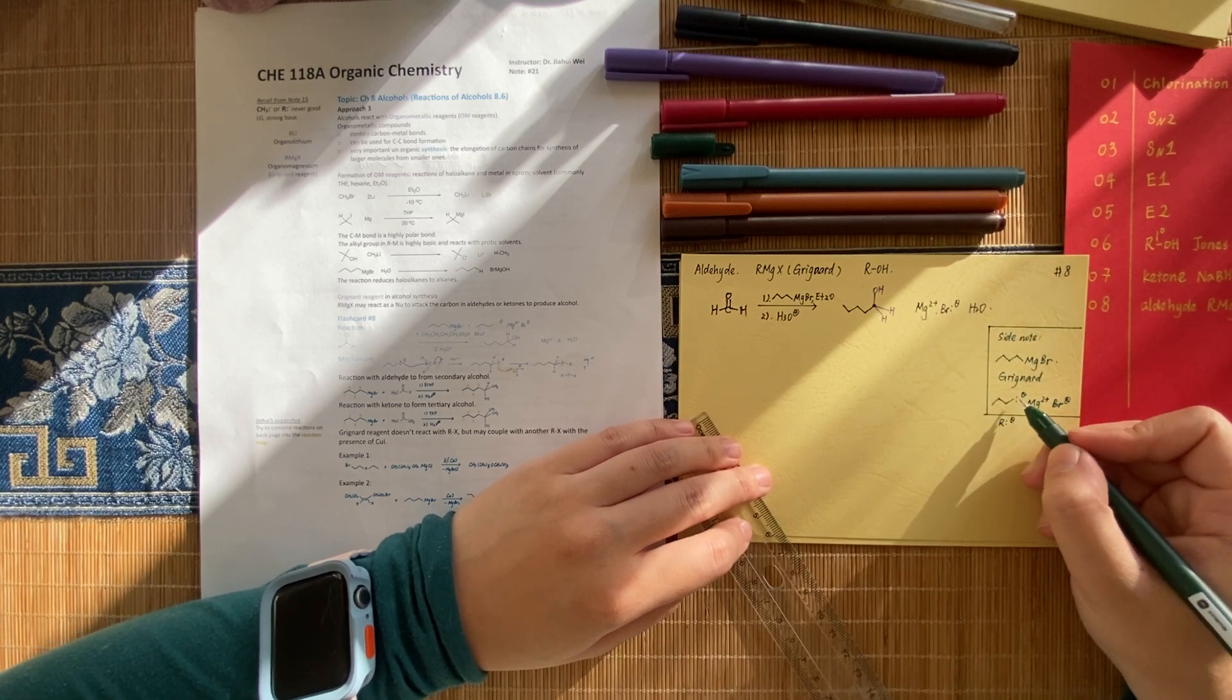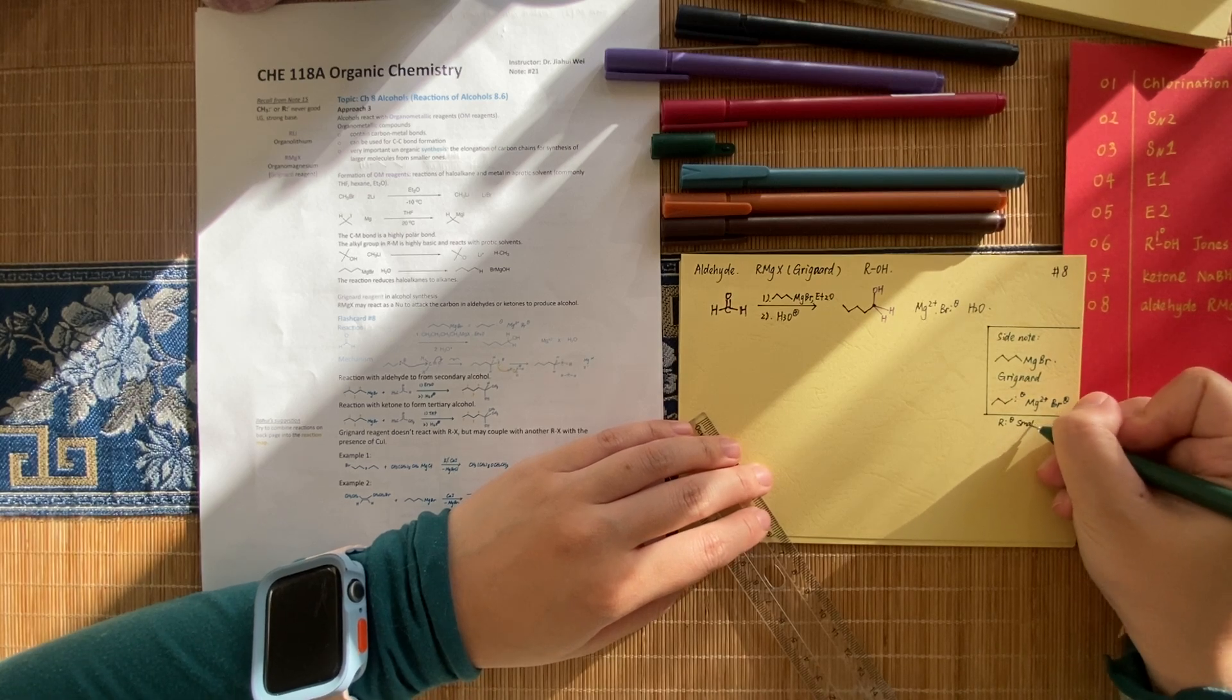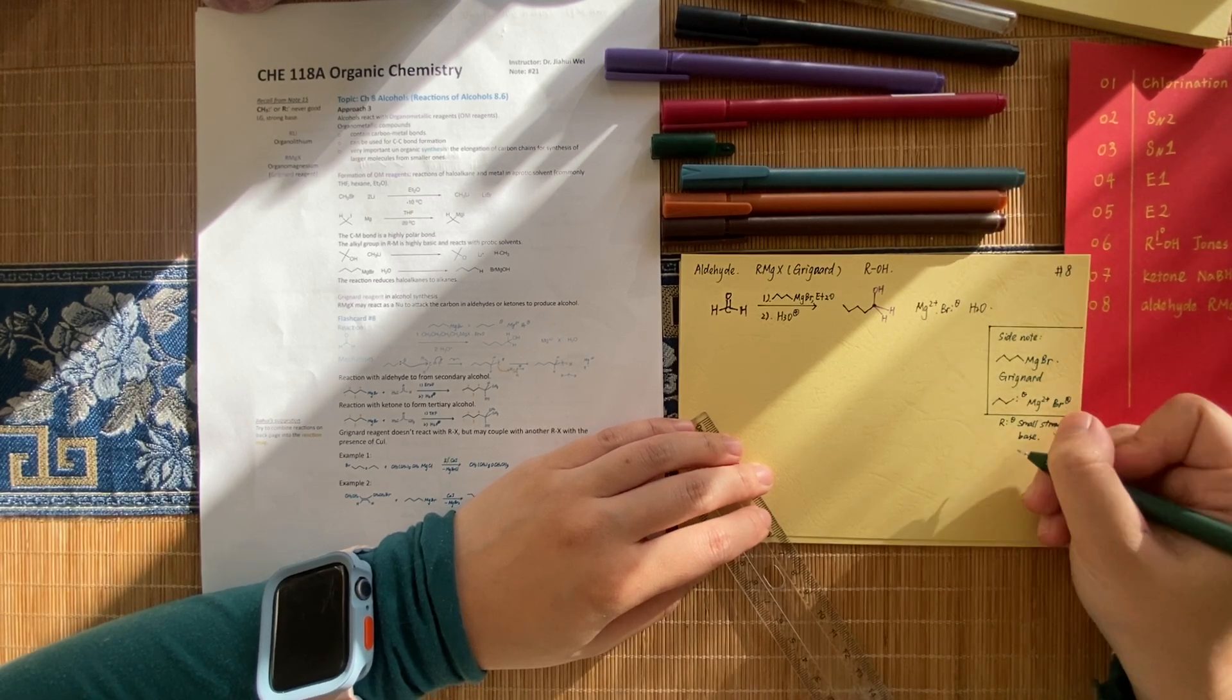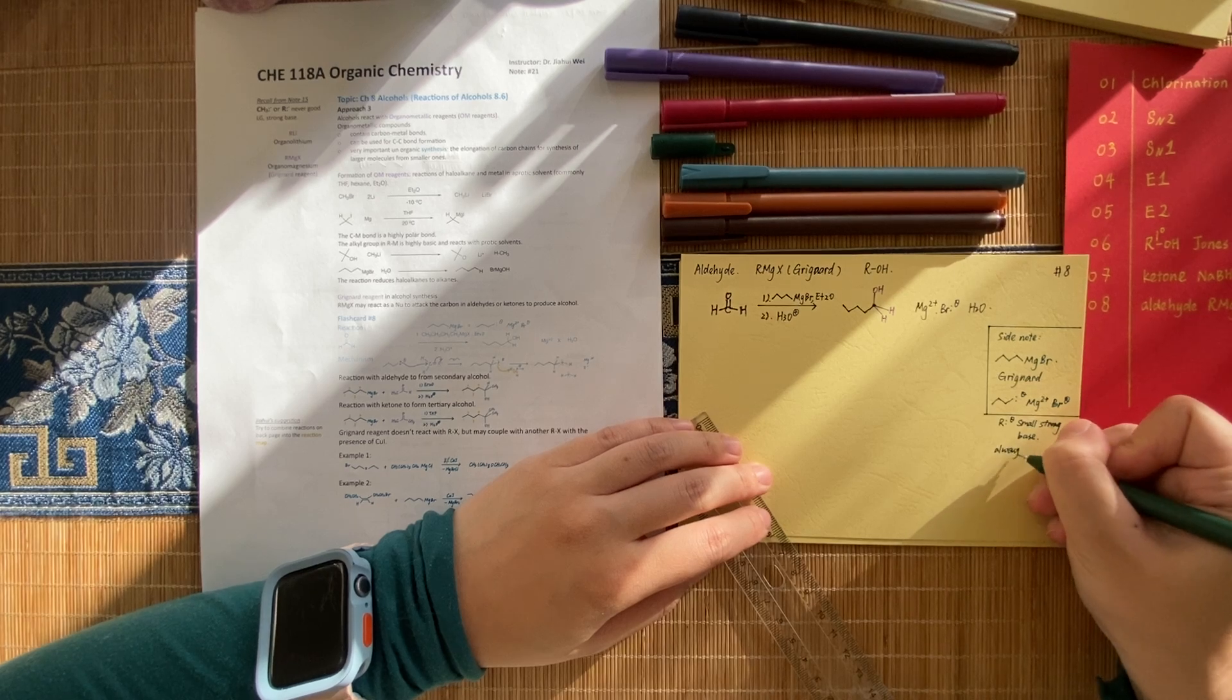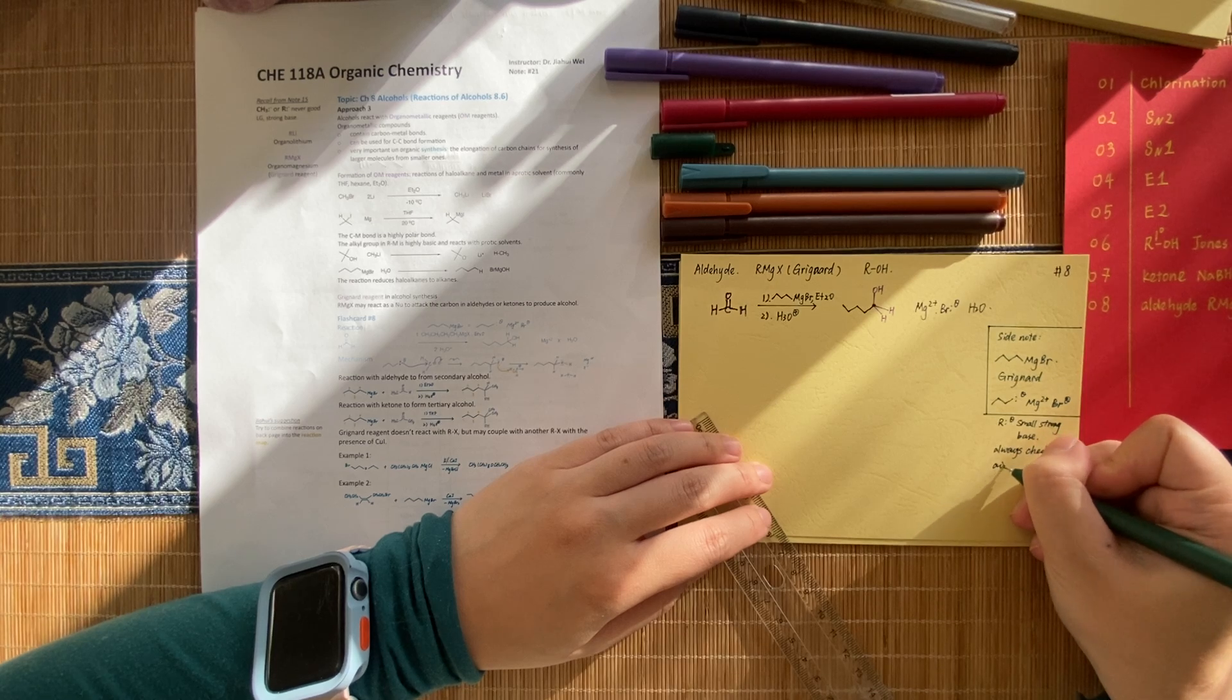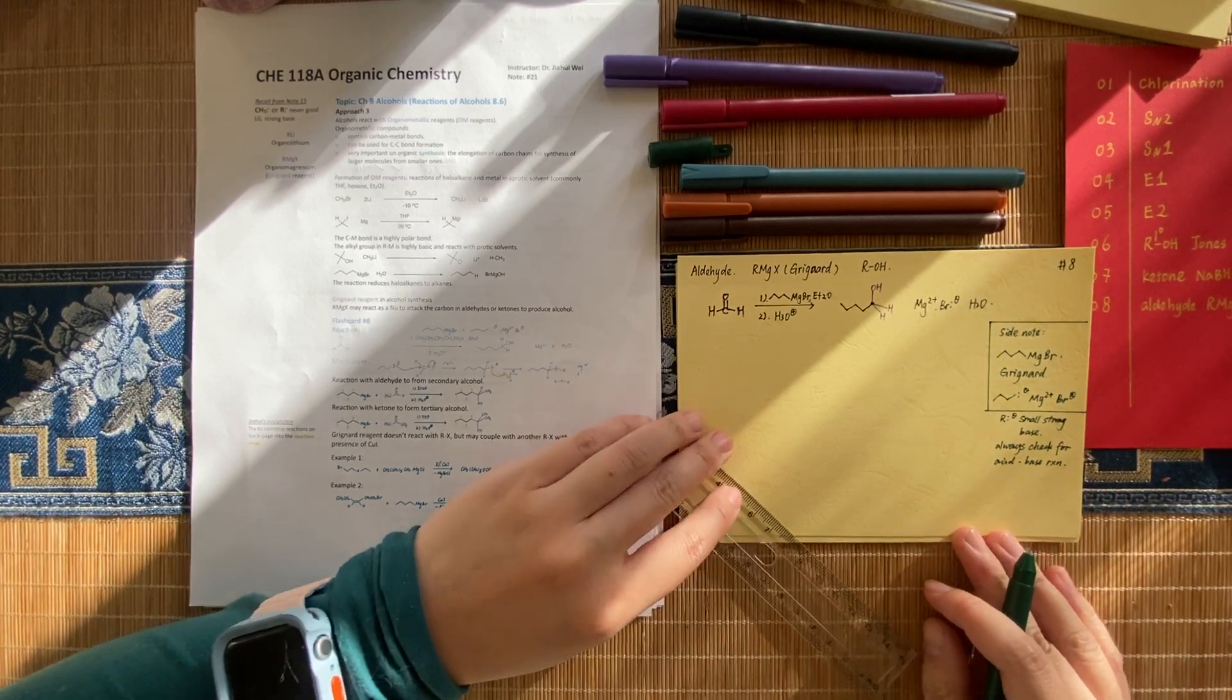But if it's an exam, you are expected to write the whole structure. You cannot write R minus. It's a small, strong base. Always check for acid base reaction.